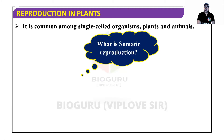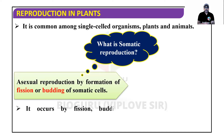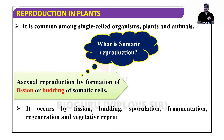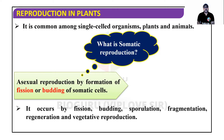Asexual reproduction is common in single-celled organisms, plants, and animals. Somatic reproduction is reproduction by formation of fission or somatic cells. Our body has two types of cells: reproductive cells and somatic cells. 'Soma' means body, so all cells in your body except germ cells are called somatic cells. In plants, the term 'vegetative cells' is used instead of somatic cells.